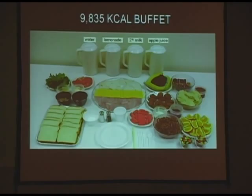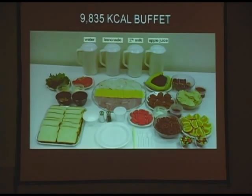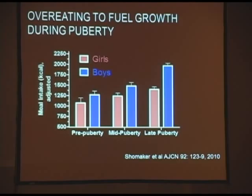That allows us to think about studying overeating behaviors using a buffet-style paradigm. In our lab we have a roughly 10,000-calorie buffet. It has drinks, sandwich fixings, cheeses, fruits, chicken nuggets, and a whole series of foods that allow us to look at both macronutrient composition — pure carbs, pure fats, and pure proteins — as well as total energy consumed. We can study it after an overnight fast or with a fixed preload breakfast.